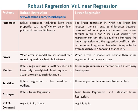Robust regression uses a method called iteratively re-weighted least squares to assign a weight to each data point, whereas linear regression uses a method called ordinary least squares.